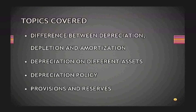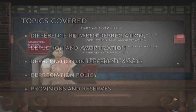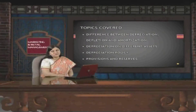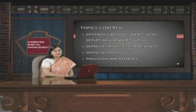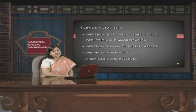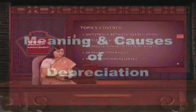We will also learn about the depreciation on different assets, depreciation policies, and provisions and reserves. These are the fundamental things we are going to discuss under this chapter. In the next chapter, we will discuss depreciation methods, that is the straight line method and the diminishing balance method.